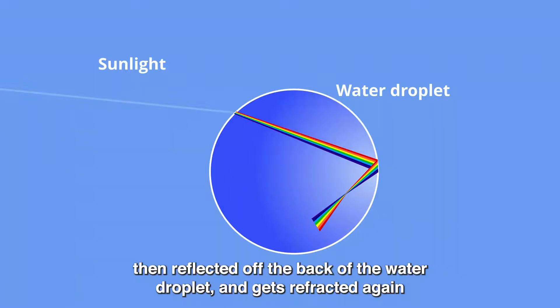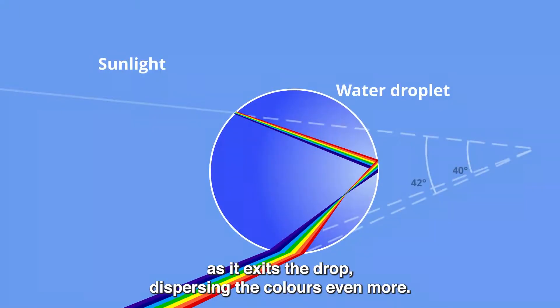The light is then reflected off the back of the water droplet and gets refracted again as it exits the drop, dispersing the colors even more.